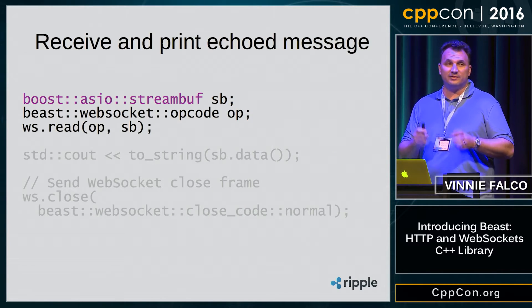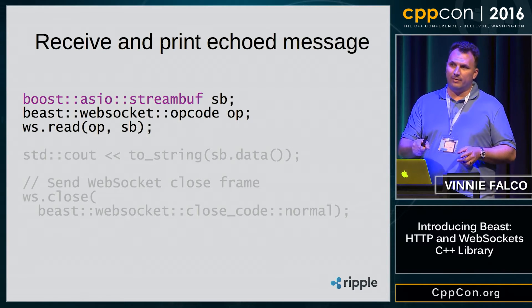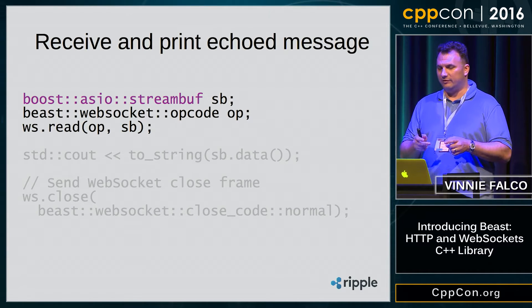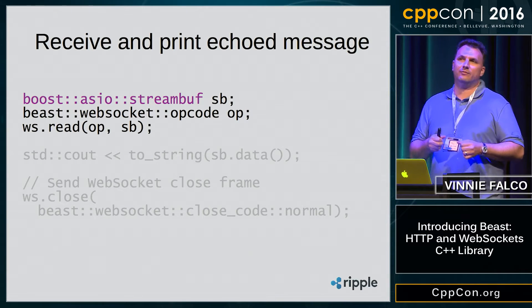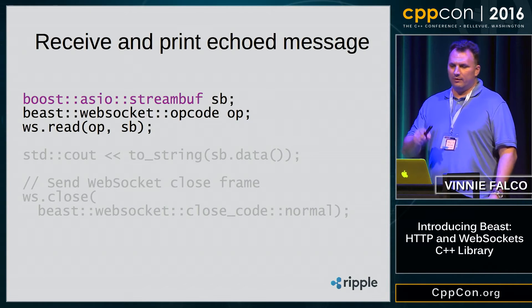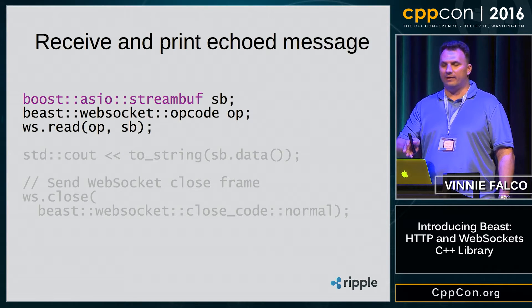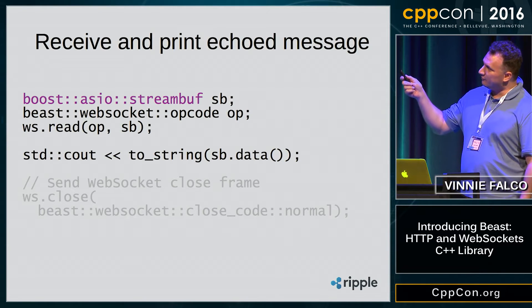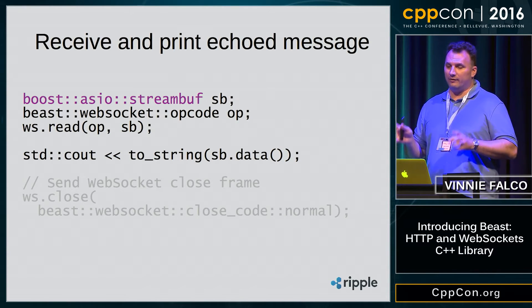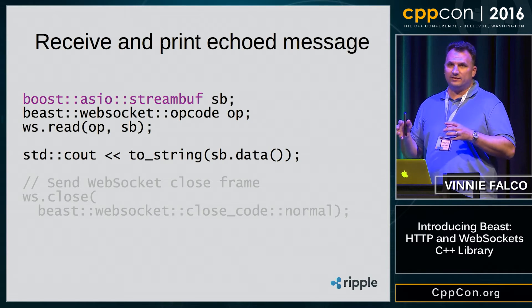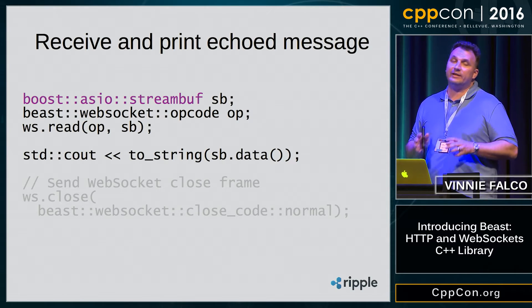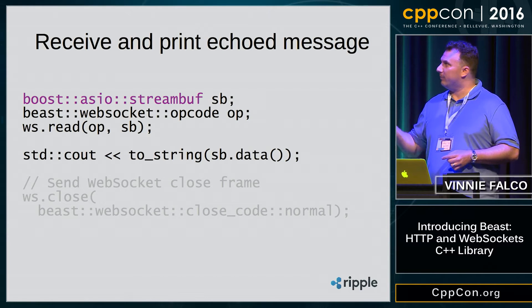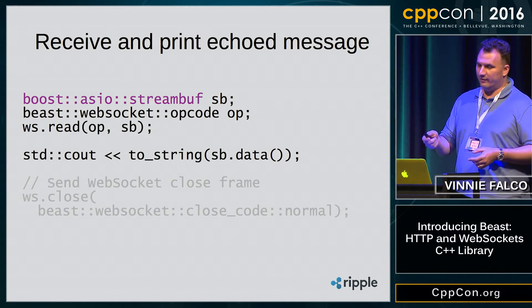We sent our message. Now we want to receive a message and print it. We declare a stream buffer to hold the contents of the message, and a local variable of type opcode — an enum that tells you if your received message is binary or text, which is part of the WebSocket protocol. We call read; when that returns, we know if it's binary or text and we have the data in our stream buffer. To-string is a Beast utility function that converts a const buffer sequence into a standard string. Beast comes with not only HTTP and WebSocket, but a really handy collection of utility functions — they're in the docs.